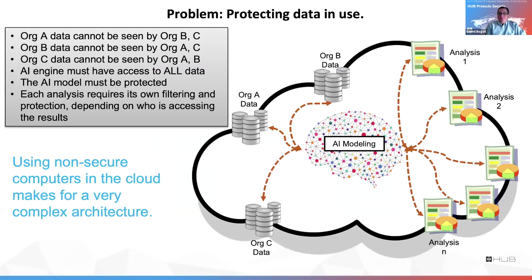So what are the issues with confidential computing in the cloud? The issues with confidential computing is that on one hand, you want to create an aggregation of data from multiple organizations. So you want multiple organizations to put data in, but you don't want them to be able to see data coming out. And this type of filtered access to the data is not very cloud friendly.